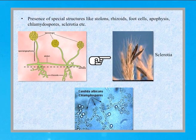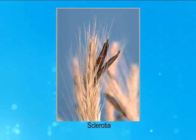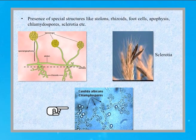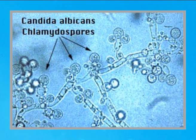Another characteristic structure is sclerotia, formed due to hardening of the mycelium. Sclerotia can resist adverse conditions such as food scarcity, water scarcity, and high temperature, allowing the mold to survive by forming this specialized structure. The third type of specialized structure is chlamydospores, a characteristic property of the genus Candida albicans, commonly known as yeast.